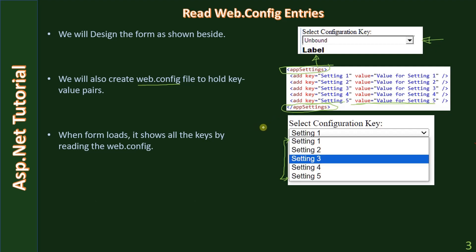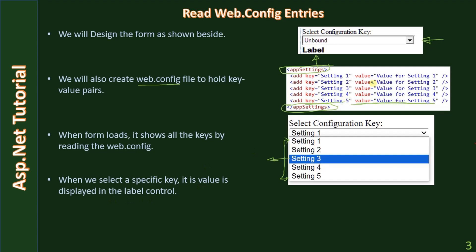When we select a specific key, say Setting 3, its value is displayed in the label control — for example, 'value for setting 3'. You can imagine the key as 'back color' and the value storing the background color for the application. Likewise, settings related to your business logic can also go inside the web.config file.